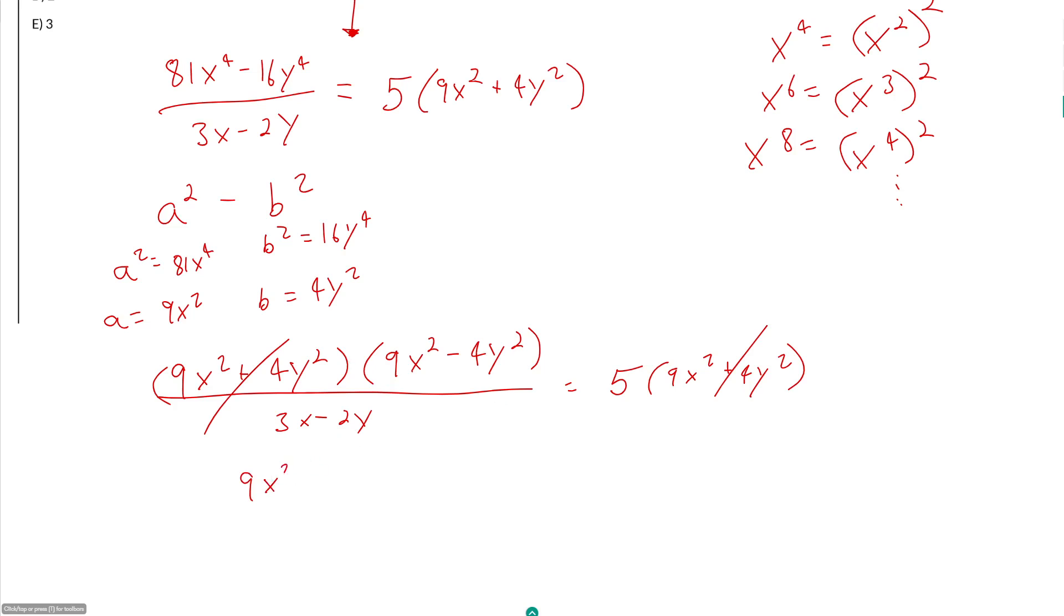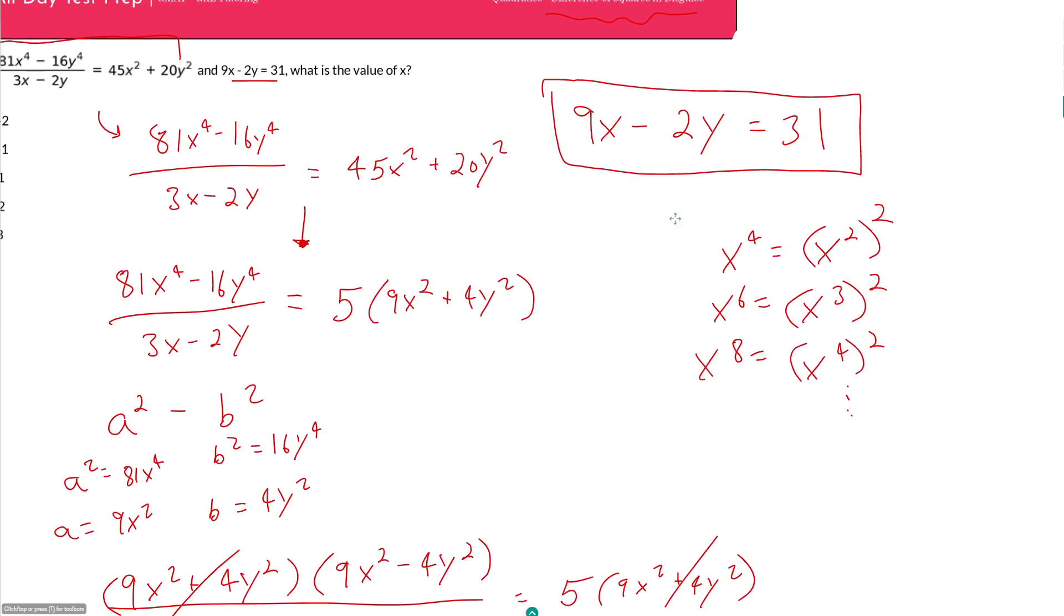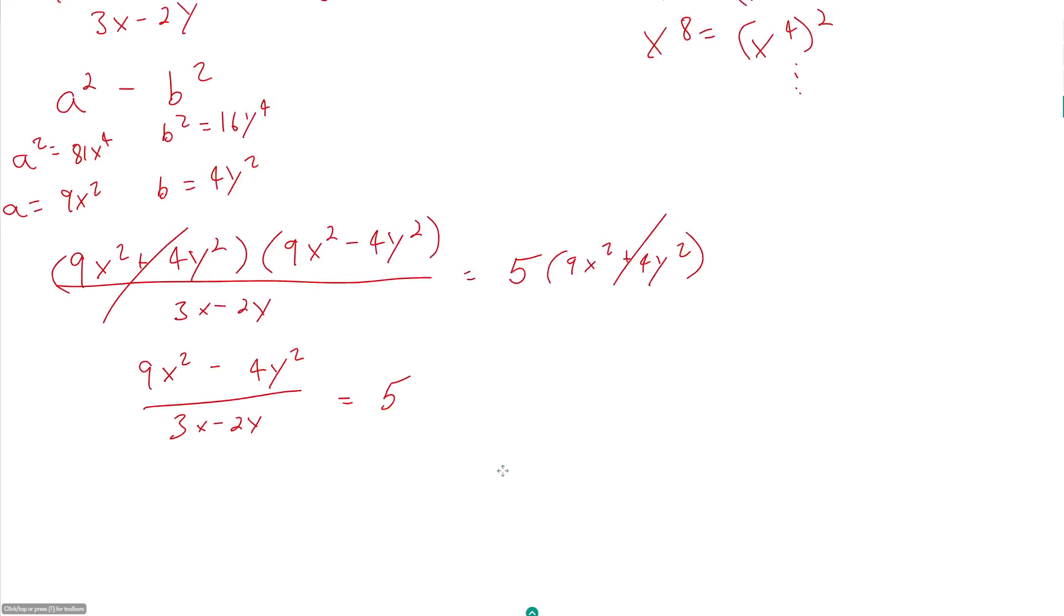But now I'm left with this. 9x squared minus 4y squared over 3x minus 2y is equal to 5. Doesn't look like there's really anything I can do here. If we try bringing down our second equation now, so 9x minus 2y is equal to 31.